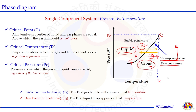Some important terms to discuss: C is the critical point, Pc is critical pressure, and Tc is critical temperature. At the critical point, all intensive properties like density become identical for both liquid and gas phases. Beyond that point, the substance is either in liquid or gas phase — they cannot coexist. Critical temperature is the temperature above which gas and liquid cannot coexist regardless of pressure. Critical pressure is the pressure above which gas and liquid cannot coexist regardless of temperature.